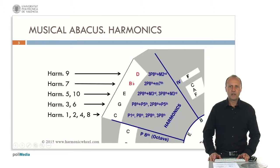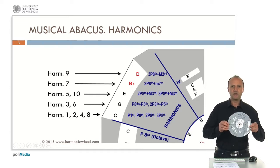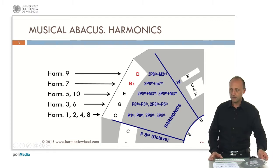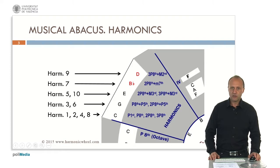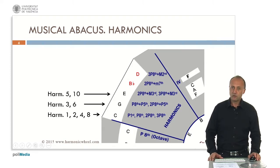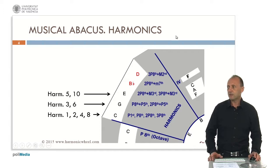If we start with note C, for example, we can use this tool, which is the musical abacus that I showed several times. We can find the first harmonics of C, which are notes showing affinity with C. We are going to keep only the first three notes C, G, and E, because the other two harmonics are a bit far from note C.